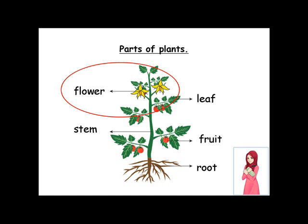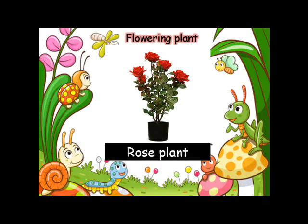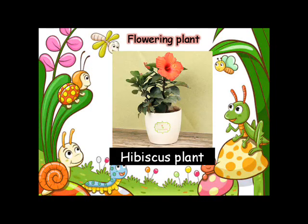Let's look at the first one, which is flower. All plants can be classified into flowering plant and non-flowering plant. Let's look at the flowering plant. Examples of flowering plant are rose plant and hibiscus plant.